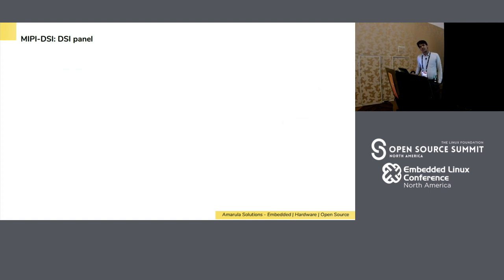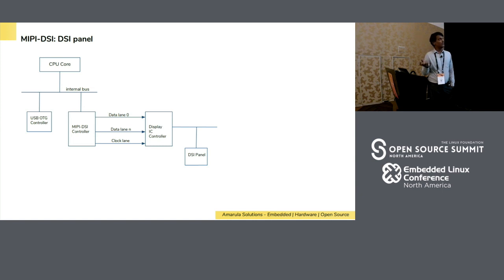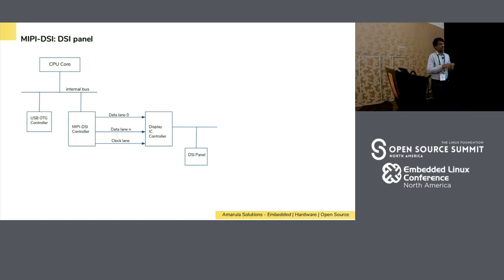The MIPI DSI — where this talk is concentrated — has a MIPI controller on the host side and a display controller on the panel side. Communication is done via data and clock lanes. It is a serial communication where the handshake starts with the clock, then the host and display communicate via data lanes. The term 'lane' means a differential pair of two pins, D+ and D−. So four data lanes means eight actual pins, considered as four lanes.